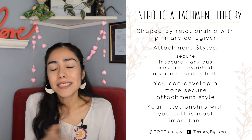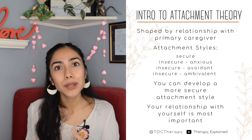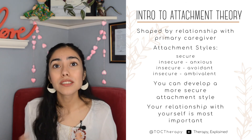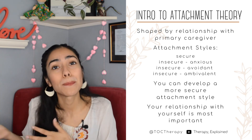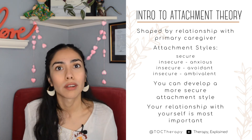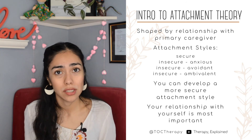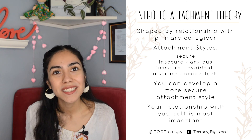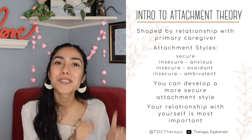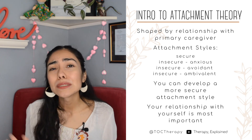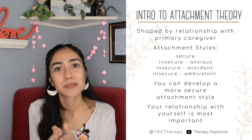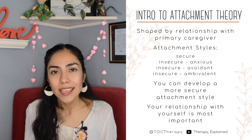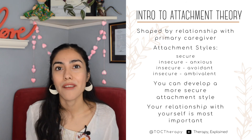In summary, the secure attachment is the one where we will feel more regulated and it will help us develop healthier relationships. But just because we have an anxious, avoidant, or ambivalent attachment style doesn't mean that we're doomed in all of our romantic and platonic relationships. It's still possible to develop healthy, strong, intimate relationships by trying to model some of the behaviors of a secure attachment — you're not stuck in one attachment style forever.